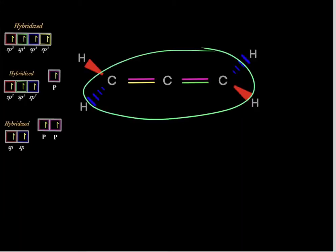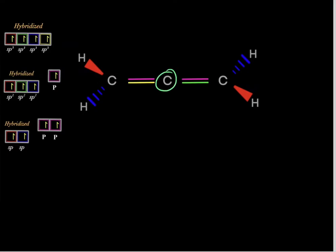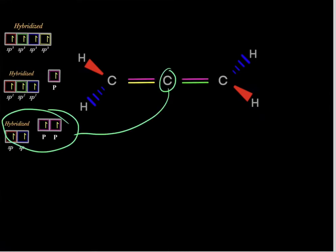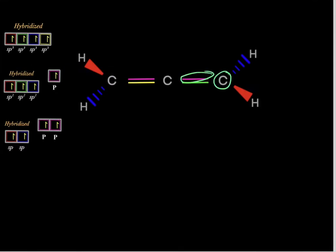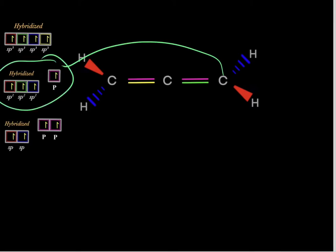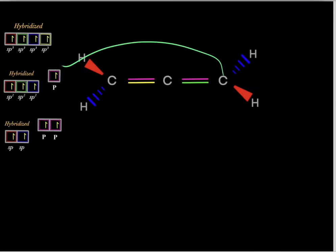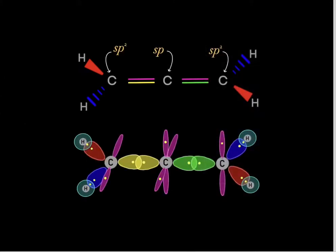Now for a tricky example: the central carbon has two extra bonds (two double bonds), requiring two p-orbitals, so it must be sp-hybridized. The adjacent carbons each have one extra bond, requiring one p-orbital each, so they are sp2-hybridized. In summary: the central carbon is sp-hybridized, while the two outer carbons are sp2-hybridized.